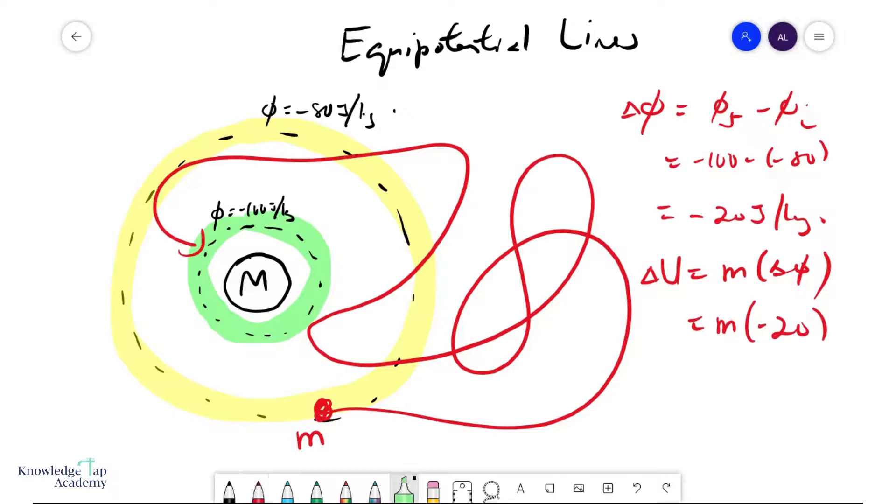The minus sign here simply indicates that the mass had lost some GPE. And so by conservation of energy, I can deduce that it would gain some KE.